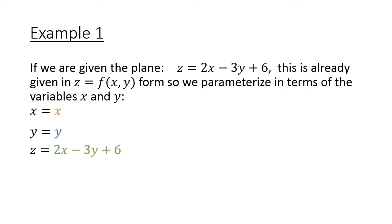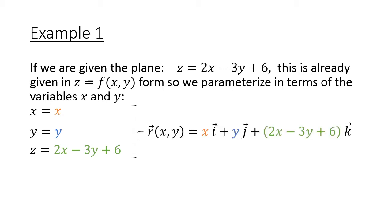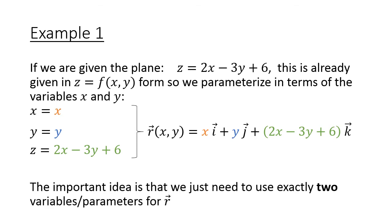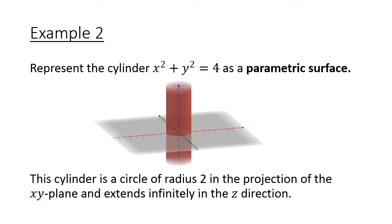Now I'll color-code these to make it easier to see. Just like we did with parametric equations being transformed into vector function equations, we match up each component for the i-hat, j-hat, and k-hat directions. So my vector function r — a function of just x and y — has i-hat component x, j-hat component y, and k-hat component 2x minus 3y plus 6, which is the formula for our surface. The most important idea when doing these parameterizations is to make sure we're only using exactly two variables or two parameters for r.